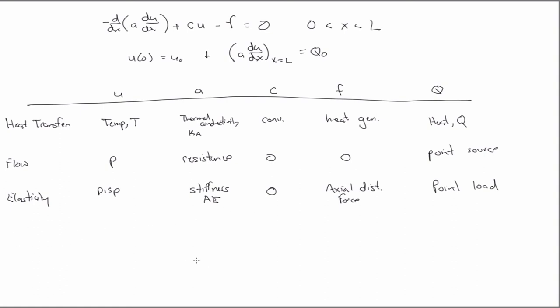So the point is, we wrote all those field equations earlier in the class, and it turns out at least in one dimension, this model equation we've been working with, by just choosing the data A, C, and F differently, and choosing the interpretation of U as temperature, as pressure, as displacement. This one model equation that we've wrote down a general finite element formulation for will actually solve the physics of all those problems.